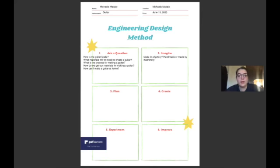For our second question we have what materials will we need to create a guitar? If we think about a guitar, an acoustic guitar, it is made out of wood, there are some strings, and there's sometimes some metal on it for the knobs at the top.